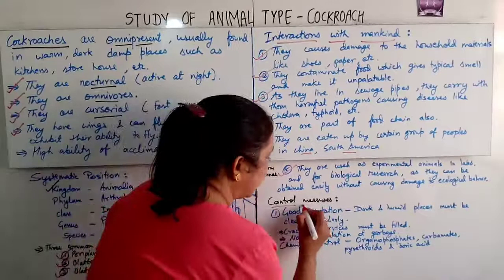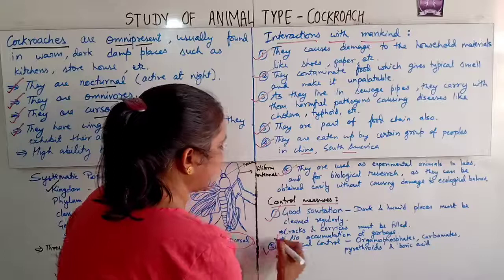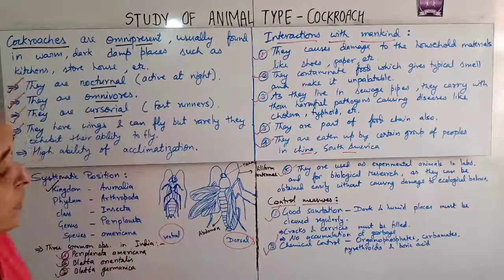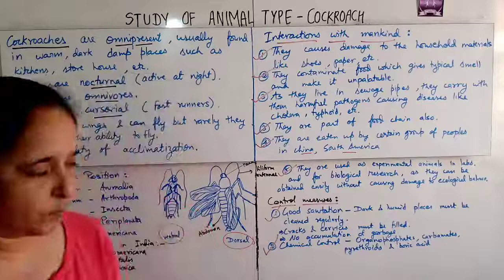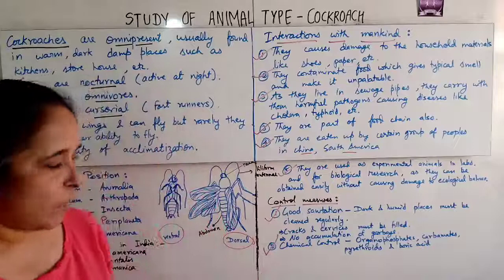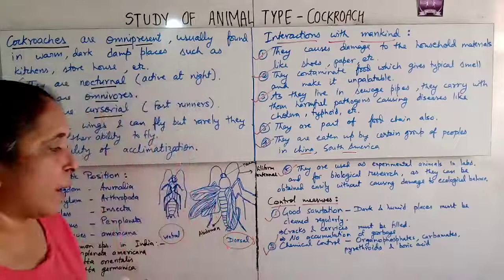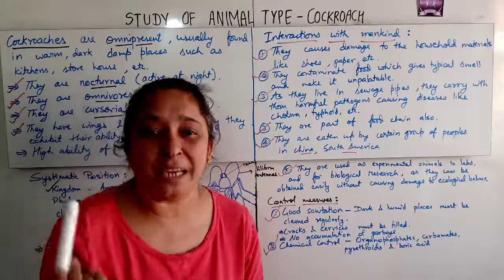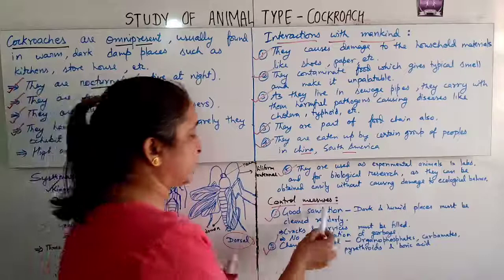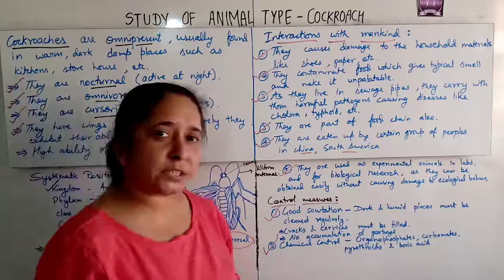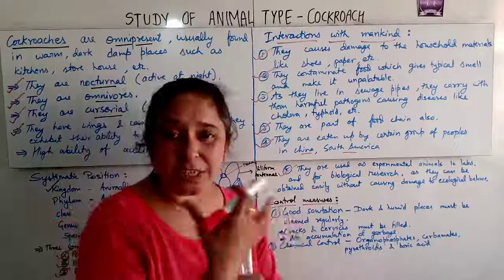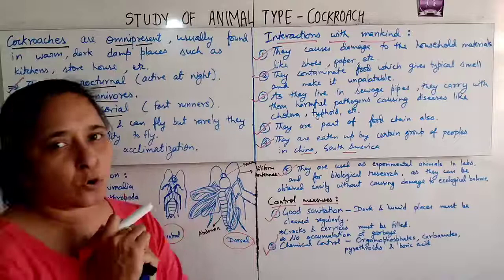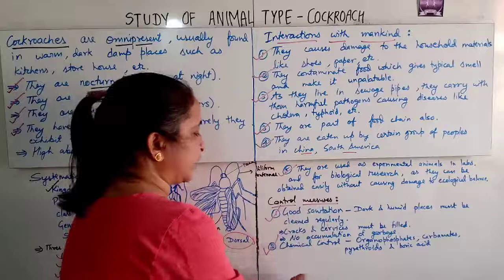To control cockroaches, there are two main methods: good sanitation and chemical control. Good sanitation means cleaning dark and humid places regularly, filling cracks and crevices so they remain closed, and ensuring no accumulation of garbage in or near your living area. Chemical control involves using chemicals such as organophosphates, carbamates, pyrethroids, and boric acid to kill or control the growth of cockroaches.